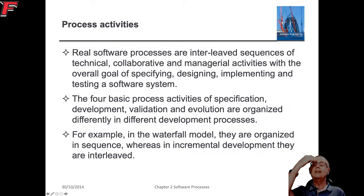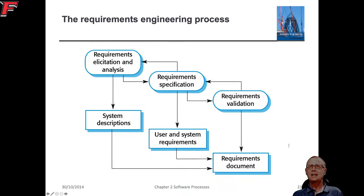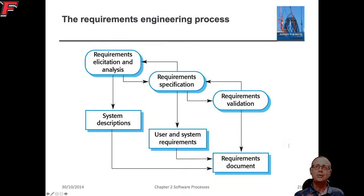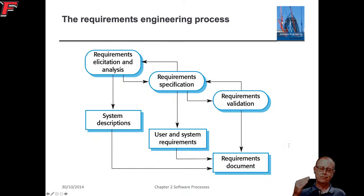The four basic activities in software are specification, development, validation, and evolution. For requirements, the first thing is requirements elicitation and analysis — how do we pull out those requirements. Then there's requirements specification, which means writing it down and making sure we've captured the requirements, followed by requirements validation.